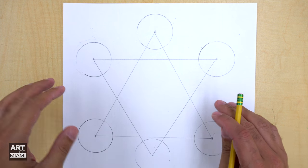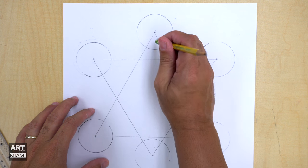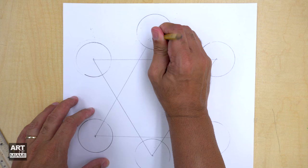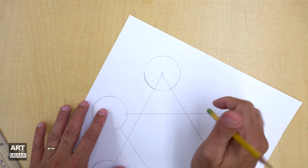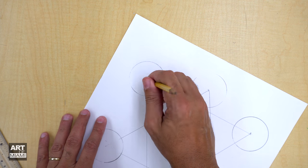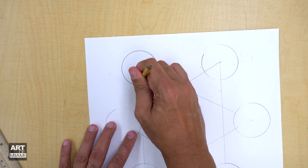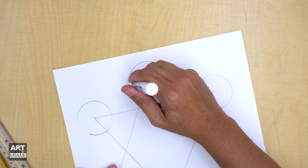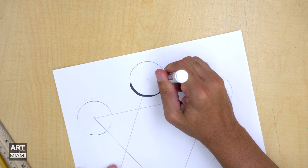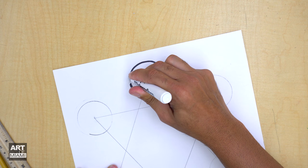All right, now that we got that done, let's erase the overlapping. So all inside the circles, we're going to erase. Let's trace our marker so when we paint, everything stays inside the line a lot better.